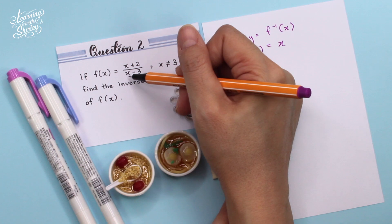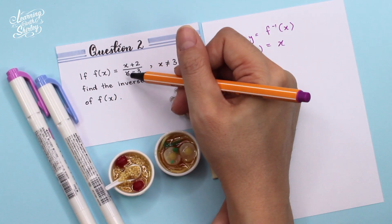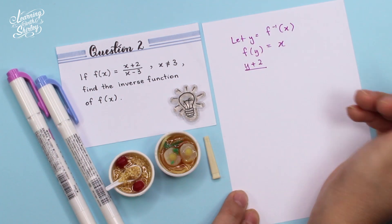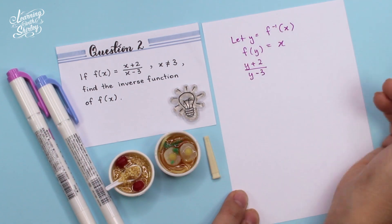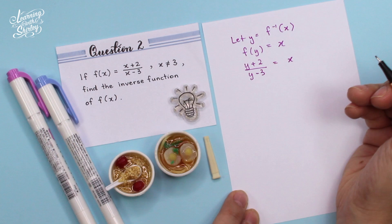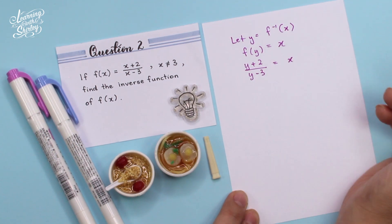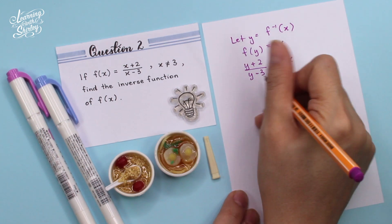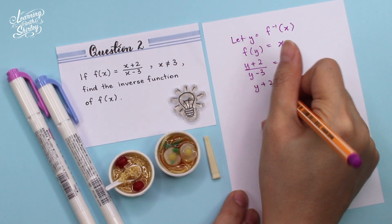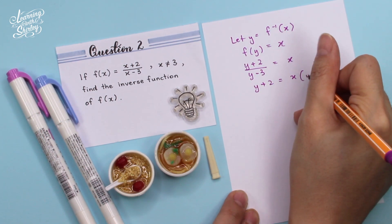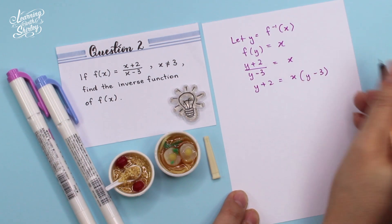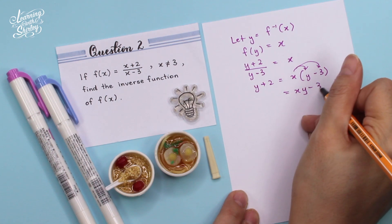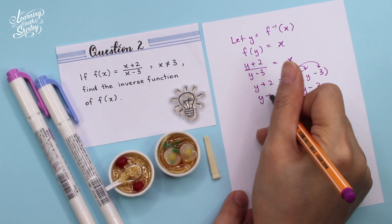Looking back at the question, when this is x this is x, and when this is y this is y. So therefore, (y plus 2) over (y minus 3) equals x. Next, we're going to make y the subject. We shift the (y minus 3) over to the right-hand side and bring down the (y plus 2), so x(y minus 3). Next, we expand this bracket, so it becomes xy minus 3x, and we bring down the y plus 2.